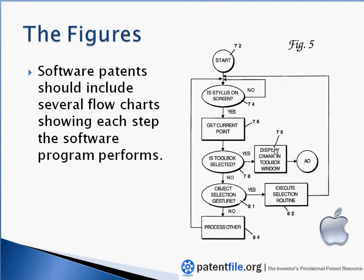Each of these steps are numbered, and this is important because you're going to want to remember what this numbering scheme looks like. I would write your figures first, then print them out and have them next to you, and then when you're writing your software patent application, you would use these numbering schemes to describe each step as you're writing your detailed description or your specification of your invention.